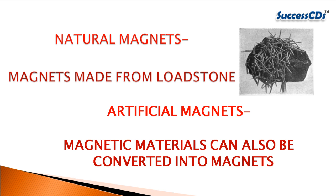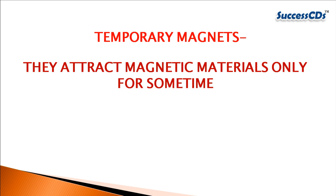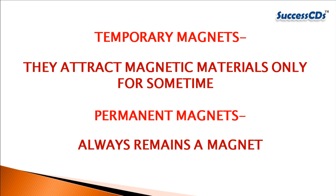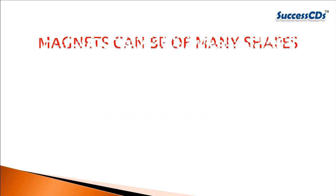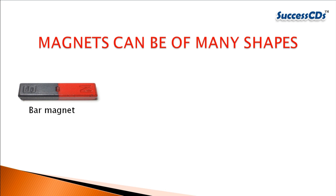Natural magnets are magnets made from lodestone. Artificial magnets are those magnetic materials which can be converted into magnets. Magnets can be temporary — that is, they attract magnetic materials only for some time — or permanent, meaning they always remain a magnet.